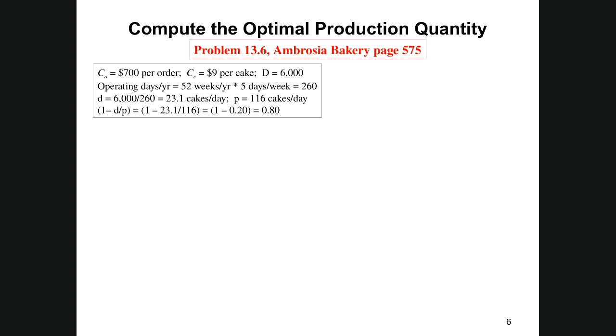Part C is optimal number of orders per year. The optimal number of orders per year is our annual demand divided by the optimal order quantity, D divided by Q star. That's going to be 6,000 divided by 1,079, which is a little bit less than six. It turns out to be 5.56 orders.